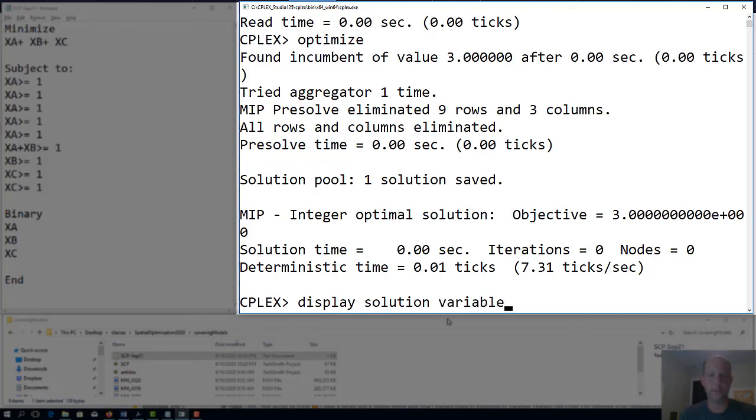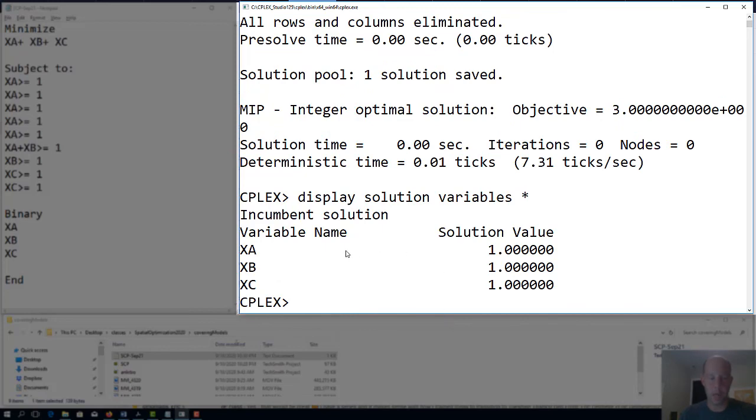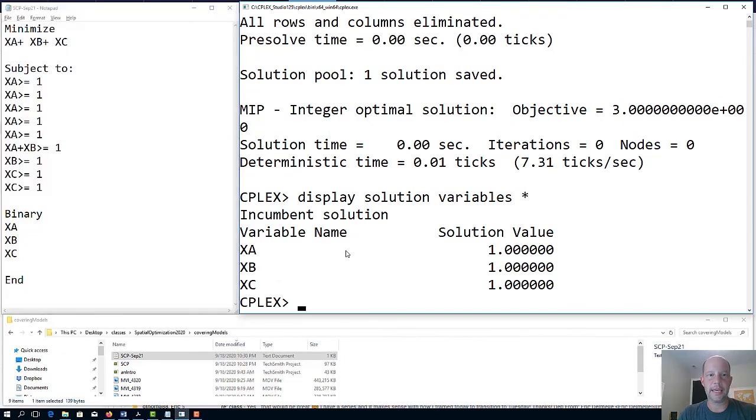Now I can see the solutions: display solution variables. It tells me that all the variables x_A, x_B, and x_C are selected.